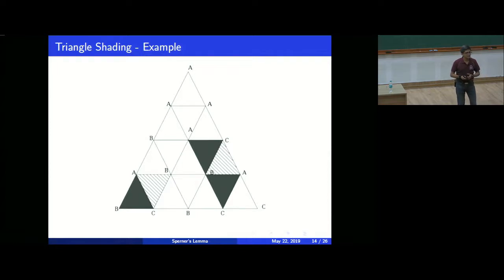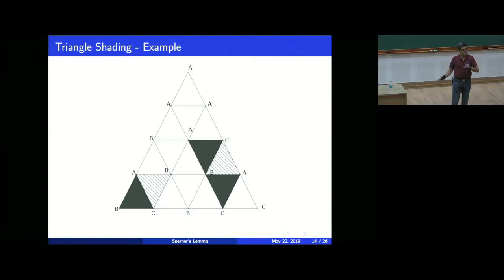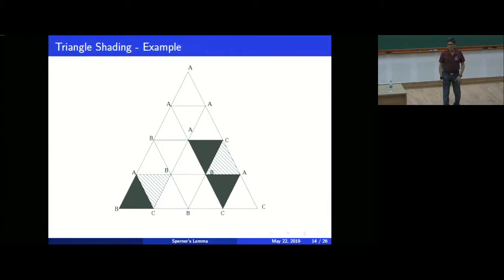We are trying to prove Sperner's Lemma. We only need a part of it, which tells us there is at least one triangle with vertices A, B, C. It says that if you keep triangulating to infinity, there will still be one triangle with all three labels A, B, C — it will not be the case that all triangles have the same vertices. Of course, the result is a bit stronger than that, and we will try to prove something stronger.